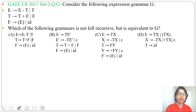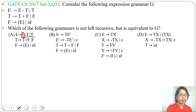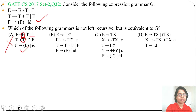Let's analyze one by one option and eliminate some options. Option A: E derives E minus T or T — it is left recursive. T derives T plus F or F — this is left recursive. Left recursion is present and this grammar is the same as the original. So option A is wrong.